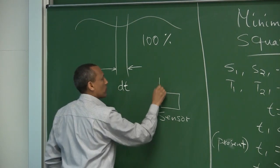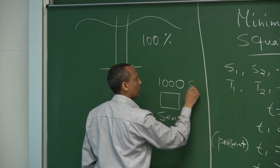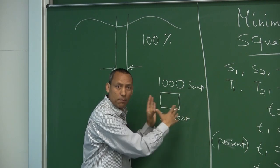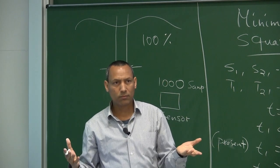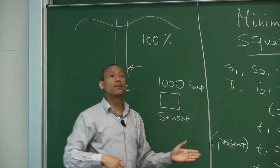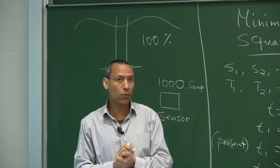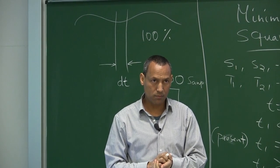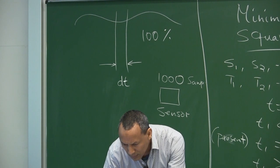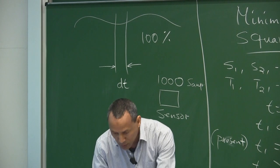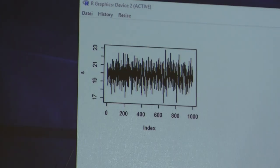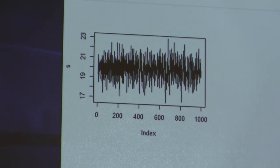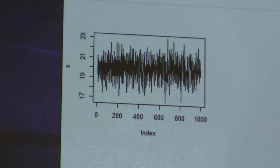Within that period of time, we take 1,000 samples. Another assumption with estimation theory is that the samples taken by this sensor have something to do with reality — it's not that the temperature is 20 and the sensor measures minus 4 degrees centigrade. We assume the samples taken with the help of this sensor to some extent reflect reality. Every time we make samples, we get a different value, so the outcome of the sensor can be considered as a random variable.